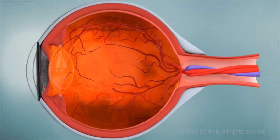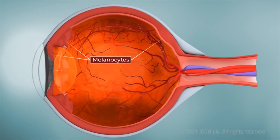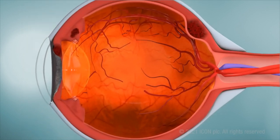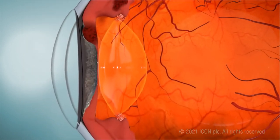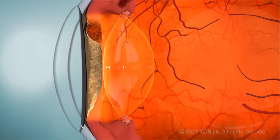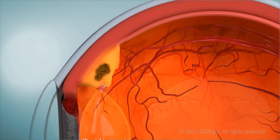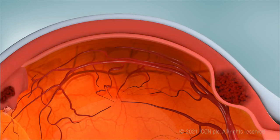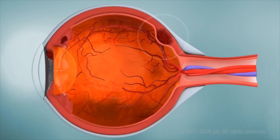Uveal melanoma commonly develops from the abnormal growth of melanocytes, melanin-containing cells lining the inside of the eye. Uveal melanoma develops in the uveal tract, the middle layer of the eye. The uveal tract is composed of the iris, the colored part of the eye that controls pupil size, the ciliary body, an extension of the iris that controls lens shape, and the choroid, a blood vessel-rich layer that nourishes the inner eye. Choroidal melanoma is the most common type of uveal melanoma, followed by melanoma of the ciliary body and iris.